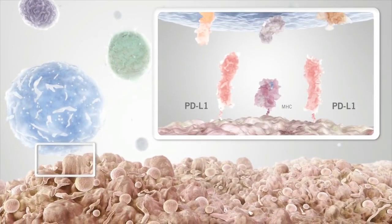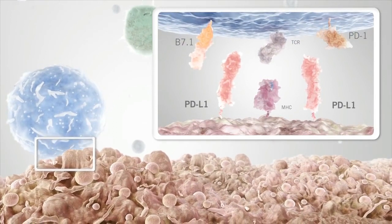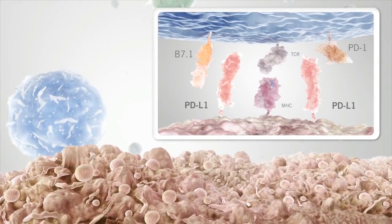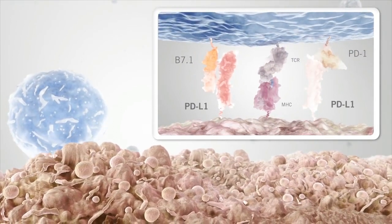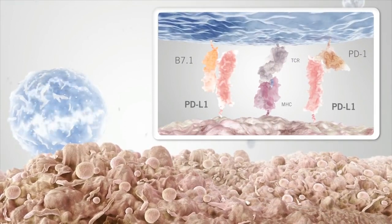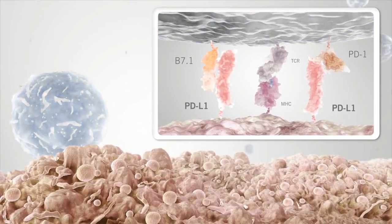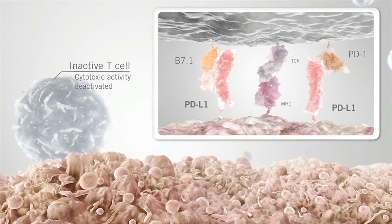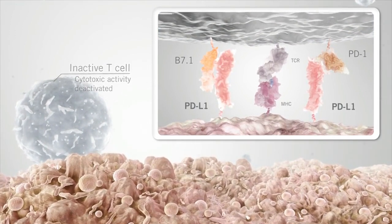PD-L1 interferes with the body's anti-cancer immune response by binding to its receptors, B7-1 and PD-1, on the surface of activated T-cells, thereby deactivating the T-cell's cytotoxic activity.